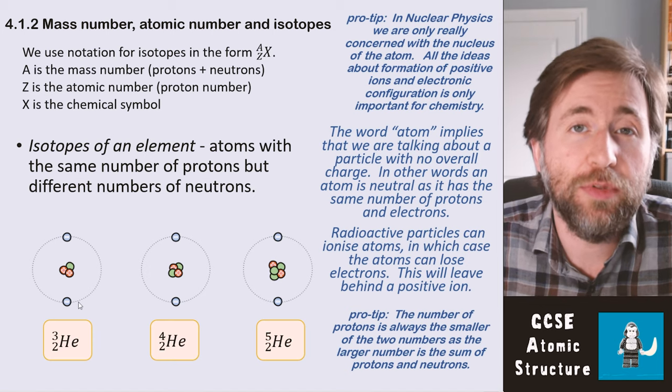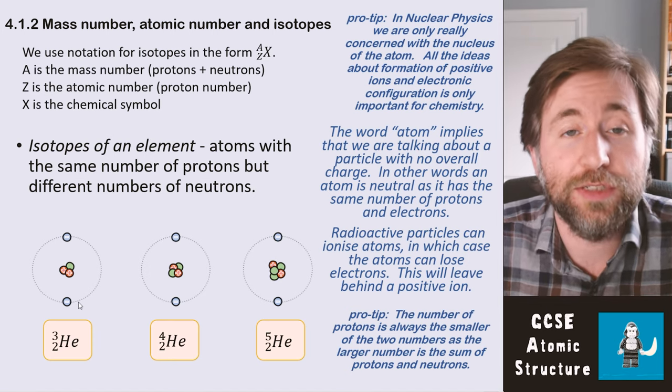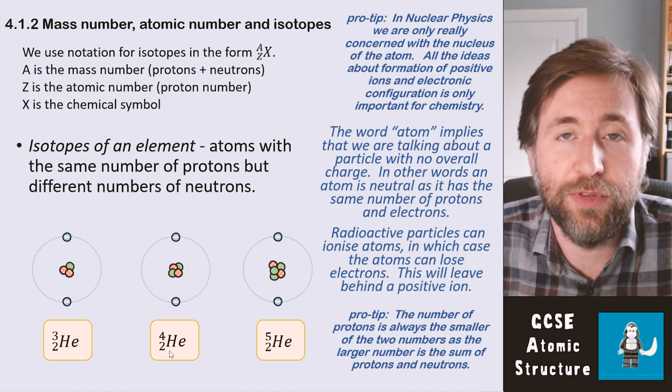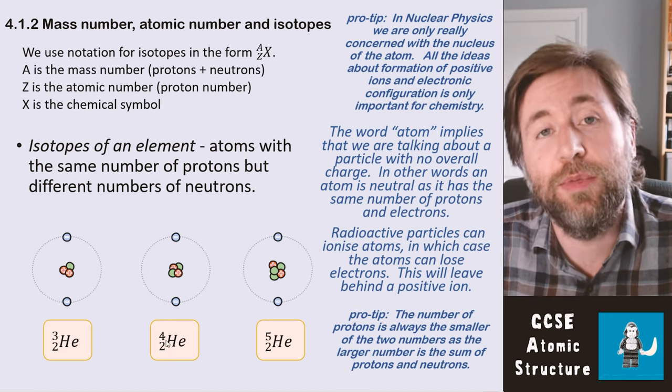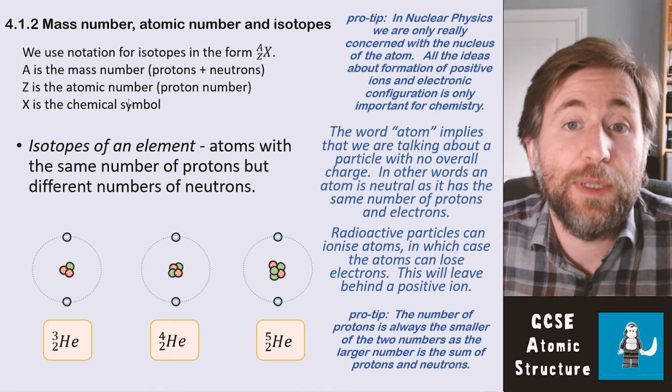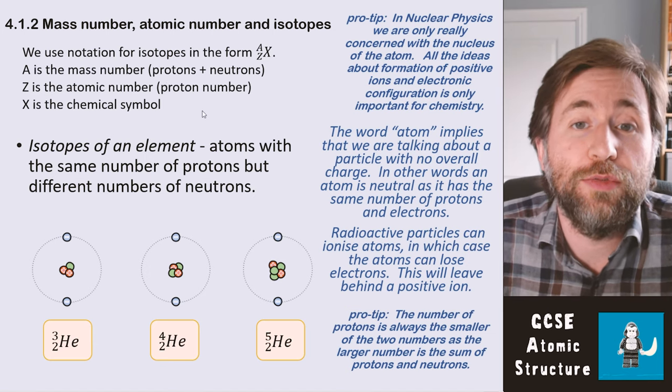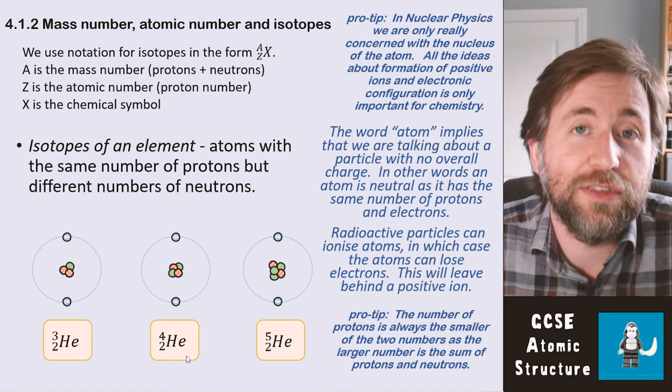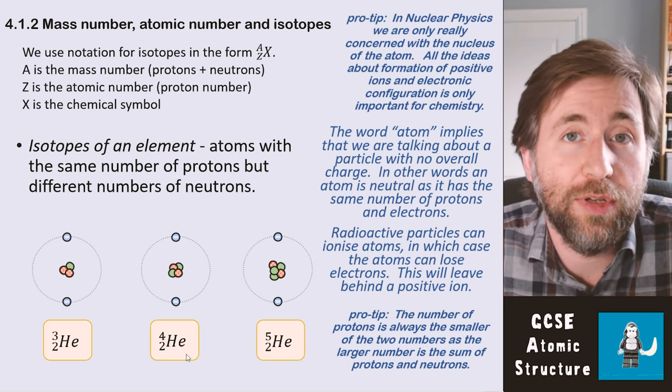My pro tip for all of this is remembering that the proton number (the atomic number) will always be the smaller of the two numbers because the larger number (the mass number) is protons plus neutrons. So you don't need to remember which one's on top or bottom, because the smallest number will always be the proton number.